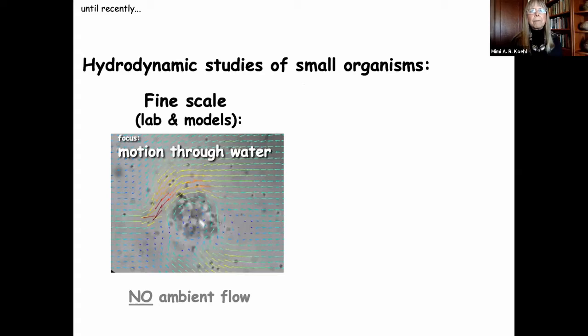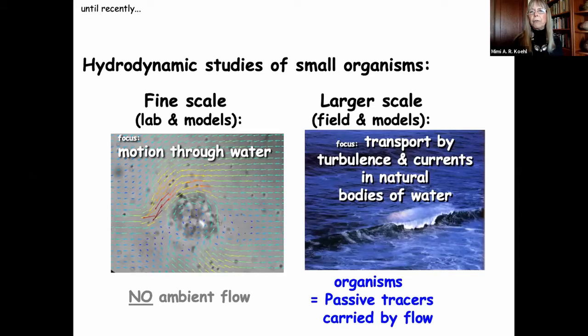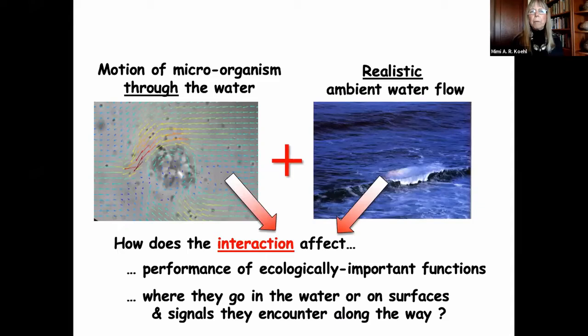Hydrodynamic studies of small organisms have until recently come in two flavors. Fine-scale studies in the lab and modeling focus on the motion of the organism through the water, and these typically have no ambient flow. On the larger scale, both field studies and models focus on transport of these organisms by turbulence and currents, where organisms are treated as passive tracers simply carried by the flow. What we've been trying to do is couple the motion of a microorganism through the water with realistic ambient flow, and ask how the interaction between these two scales affects the performance of ecologically important functions.